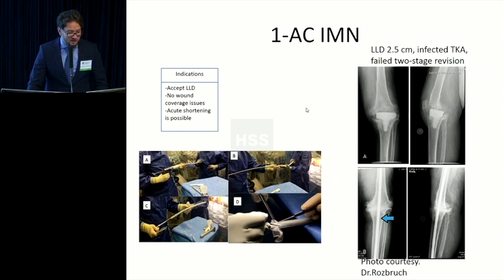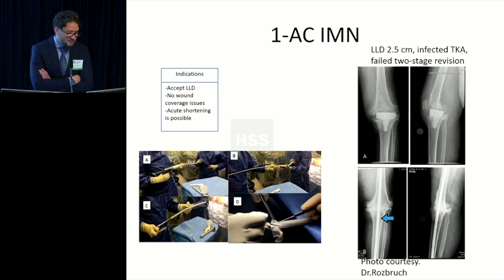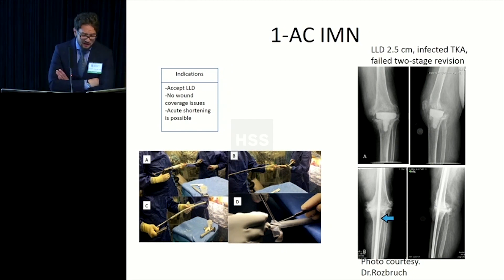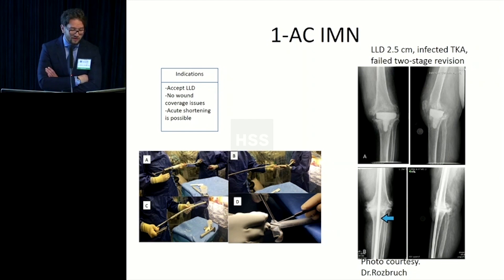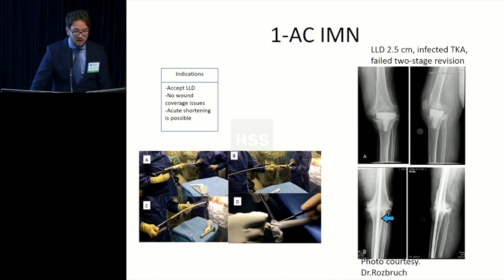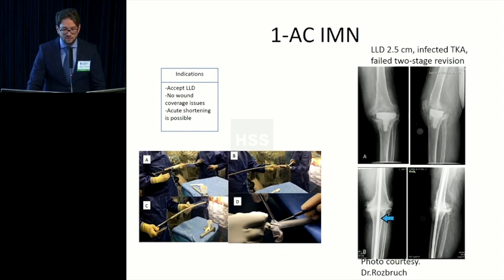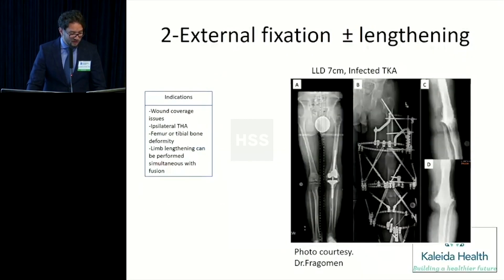The first strategy is an antibiotic-coated IM nail. This patient had an LLD of 2.5 centimeters and an infected TKA — you can already see the spacer. The LLD is acceptable, there is no wound coverage issue, and acute shortening is possible without compromising the soft tissue, so the IM nail is achievable.